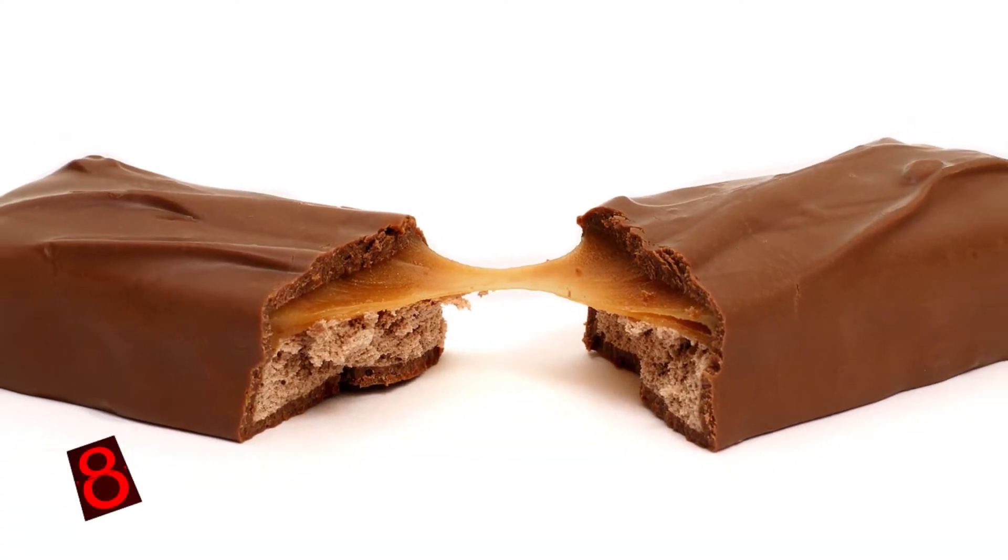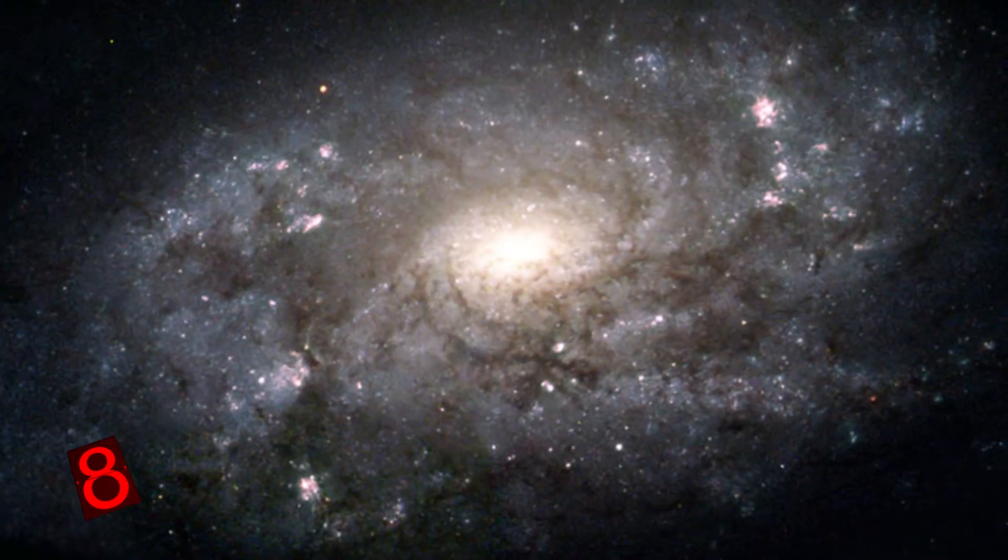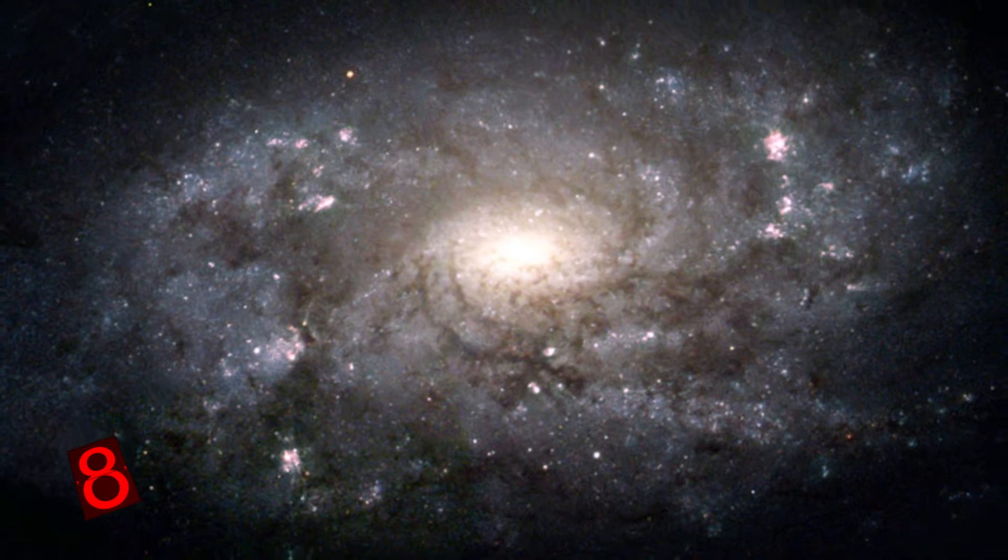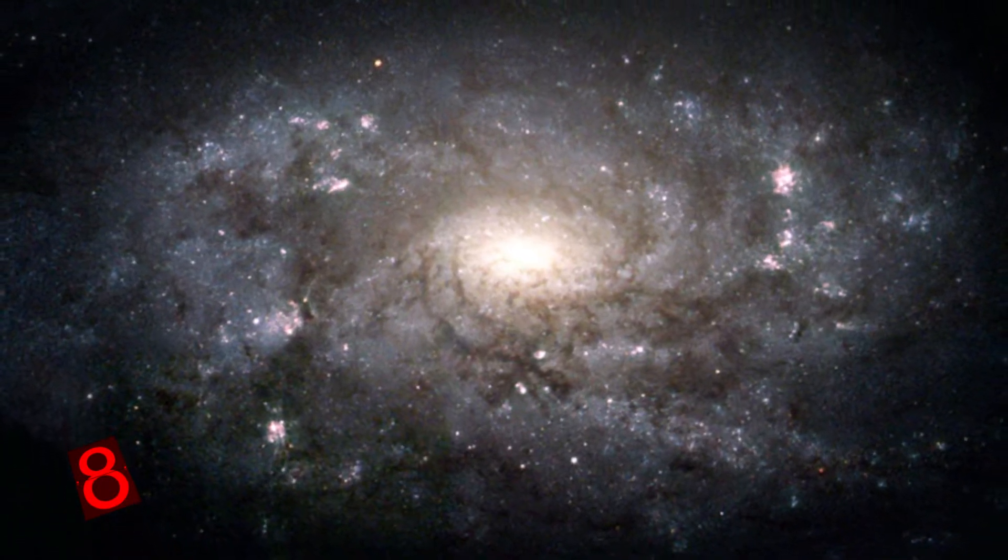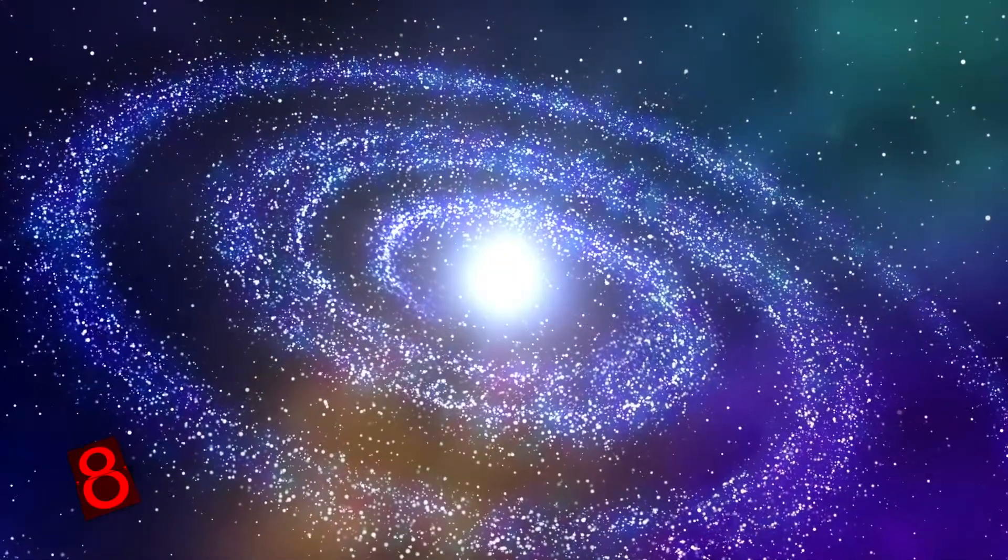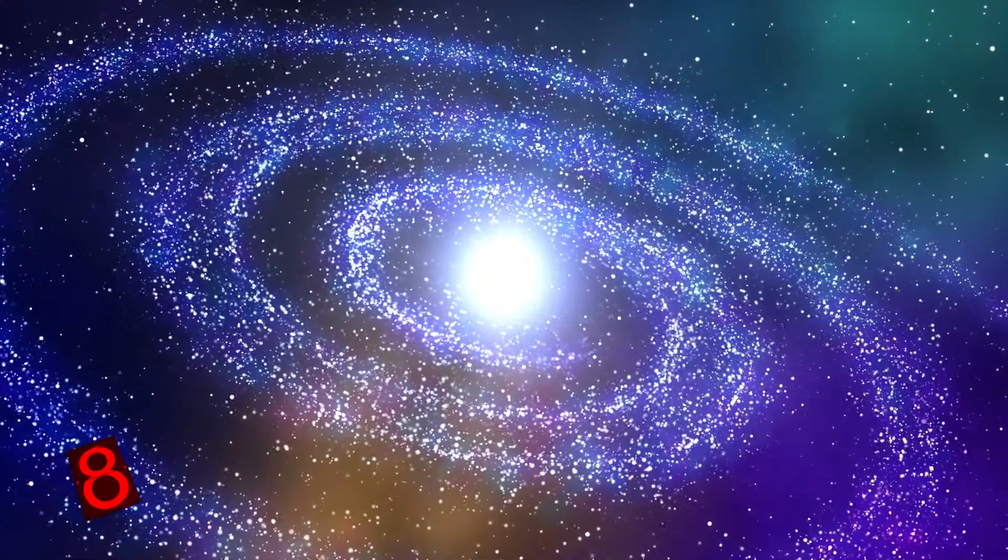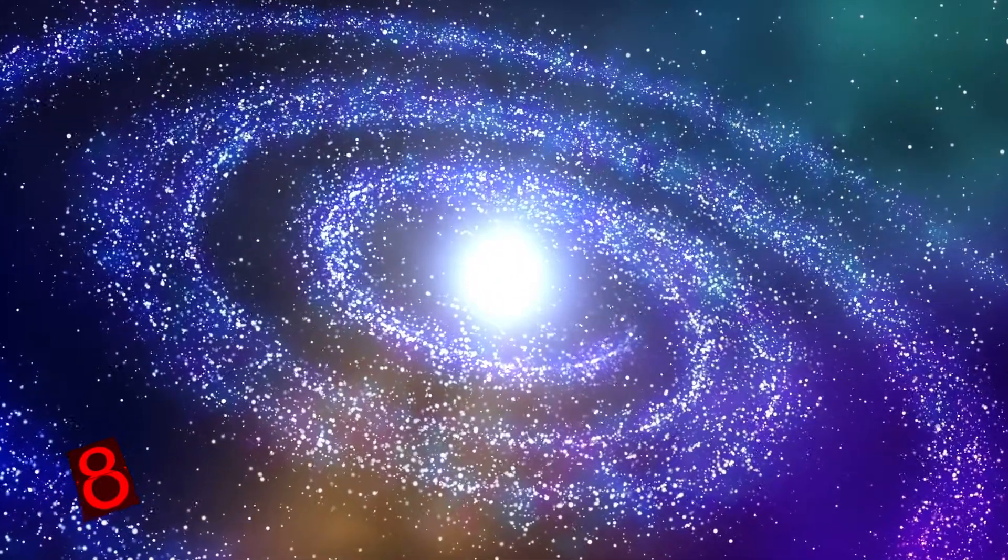Number 8. Our galaxy, the Milky Way. Not just a candy bar, the Milky Way is the galaxy our planet and solar system are situated in. Its diameter is between 100,000 and 180,000 light-years, and it contains an estimated 100 to 400 billion stars, and at least 100 billion planets.